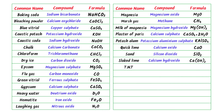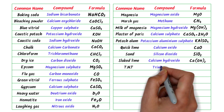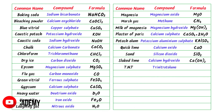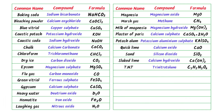The twenty-fourth is TNT — it is trinitrotoluene and its chemical formula is C7H5N3O6. The twenty-fifth is table salt — it is sodium chloride and its chemical formula is NaCl. The twenty-sixth is urea — it is carbamide and its chemical formula is CH4N2O.